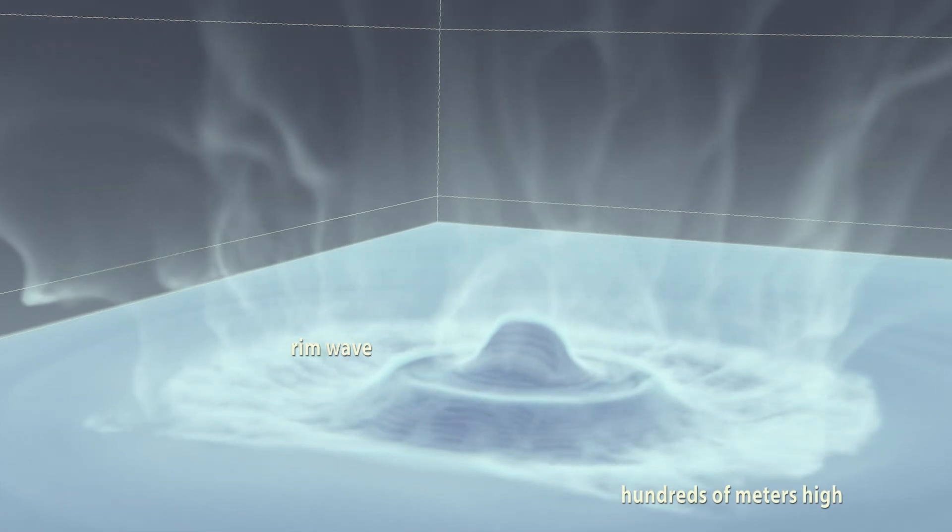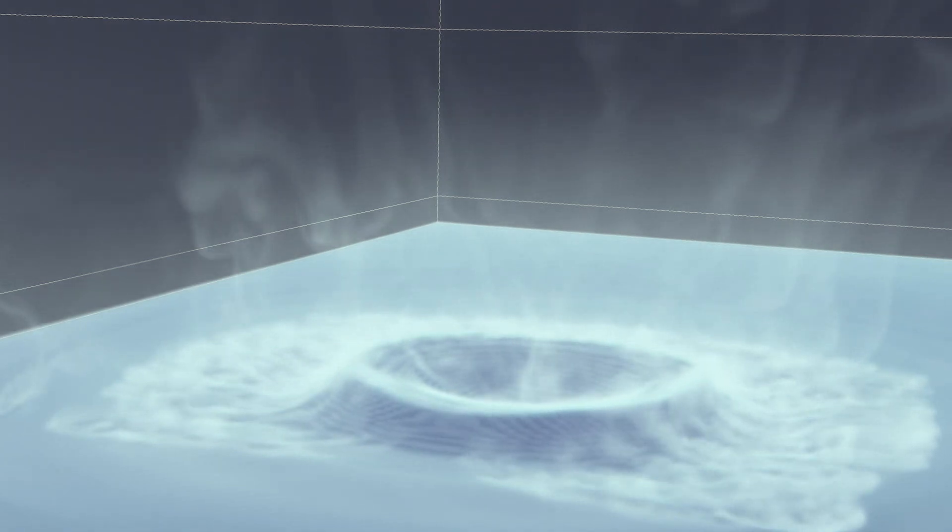A new water jet begins to form, which will in turn create a new rim wave, a process that continues for some time. Each of these rim waves has the potential to become a tsunami.